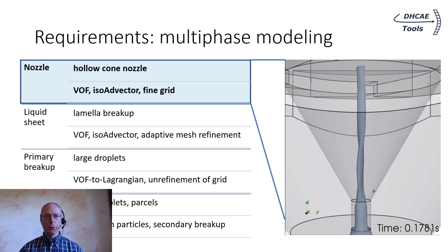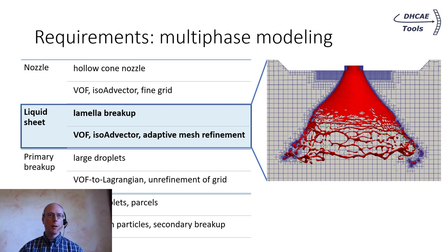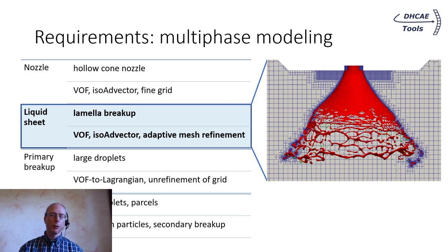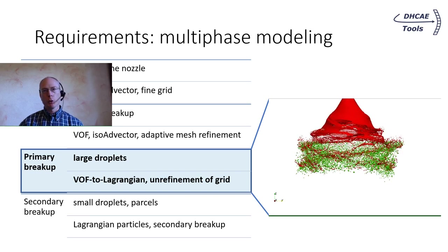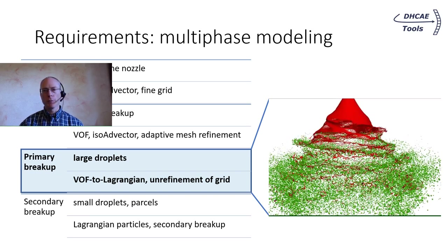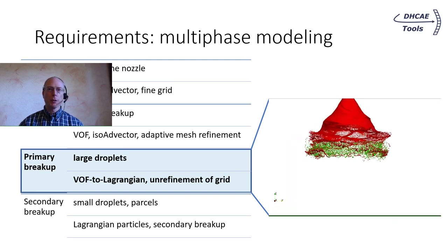First, in the holocone nozzle section, we need a volume of fluid approach to separate fluid and gas. The interface is resolved in great detail with the ISO-advector approach and with a fine grid along the region of interest. Then the nozzle exit with the lamella breakup is modeled with the volume of fluid and ISO-advector method. Furthermore, it becomes necessary to use adaptive mesh refinement to resolve the liquid sheet and the large ligaments. After the primary breakup of the liquid sheets, droplets with a suitable size and shape are transformed into Lagrangian particles. With this transformation the grid can be unrefined again to speed up the simulation.